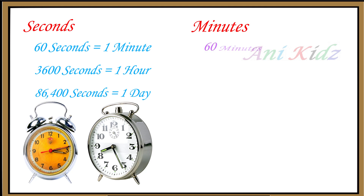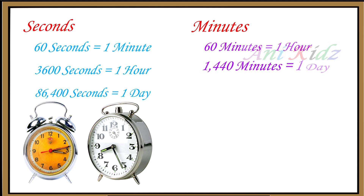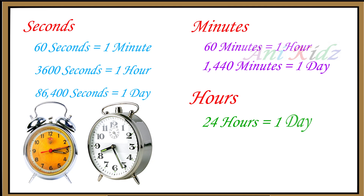And the next smaller unit is minutes. Sixty minutes is equal to one hour. One thousand four hundred and forty minutes is equal to one day. And the next smaller unit is hours. Twenty-four hours is equal to one day. One hundred and sixty-eight hours is equal to one week. These are the smaller units of time, used to calculate the time.